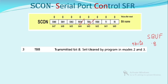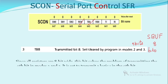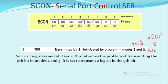TB8 is called bit 8 because bits start from bit 0, so the ninth bit corresponds to position 8 (TB8). It is the transmitted ninth bit in modes 2 and 3 and can be set or cleared by the program. Since all registers are 8 bits wide, this additional bit solves the problem of transmitting the ninth bit. It is set to transmit a logic 1 in the ninth bit position.